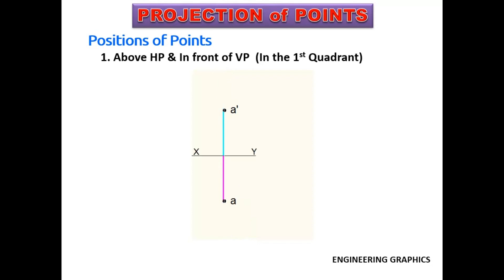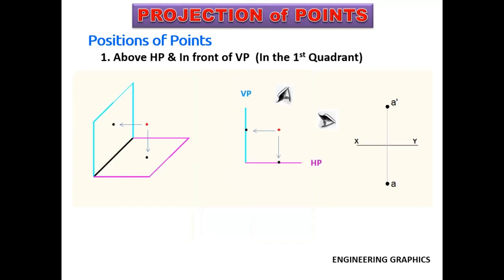The elevation of the point is always represented as a lowercase alphabet with a dash — here the point is A, so the elevation is A-dash. The plan of the point is represented only with the alphabet — here it is A. The intersection line between HP and VP is the XY line.